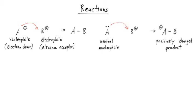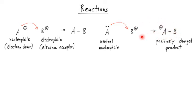A nucleophile doesn't have to be an ionic molecule. It can also be a molecule with a lone pair of electrons, and then the curly arrow shows it can attack an electrophile. The product that forms is then also a positively charged molecule, because the electrophile is positively charged and therefore the entire charge of the product is preserved. There are as many new electrons and protons in the product as there were in the reactants.